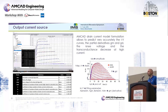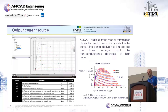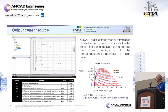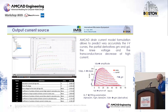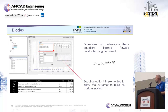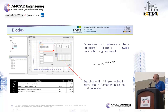This optimization can be iterated to improve the model further. While we propose our own current source formulation, you can also enter your own equations into the software and it will update the number of parameters available for fitting. For the input current diode, we use basic equations to represent the diodes and tune the parameters to fit the gate current as a function of gate voltage and drain voltage.